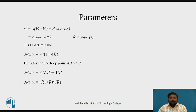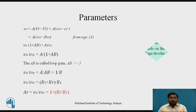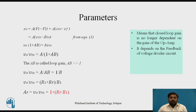Since A·beta is much greater than 1, 1 plus A·beta is approximately equal to A·beta. So Vo upon Vin becomes A upon A·beta, and A cancels, giving 1 upon beta. Therefore AF equals 1 plus Rf upon R1, meaning the closed loop gain no longer depends on the gain of the op-amp — it depends on the feedback voltage divider circuit.